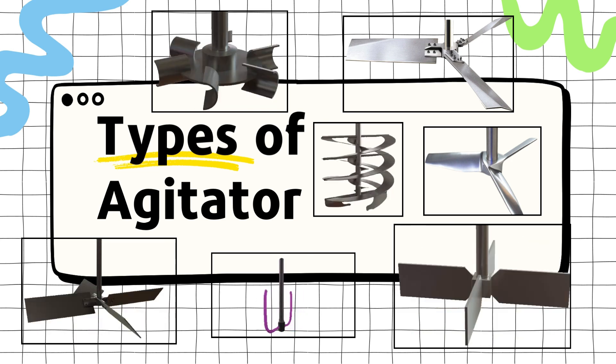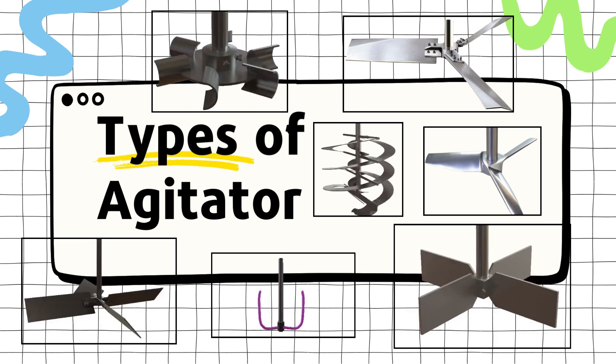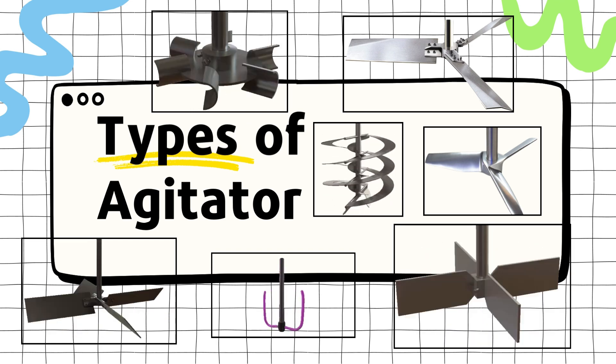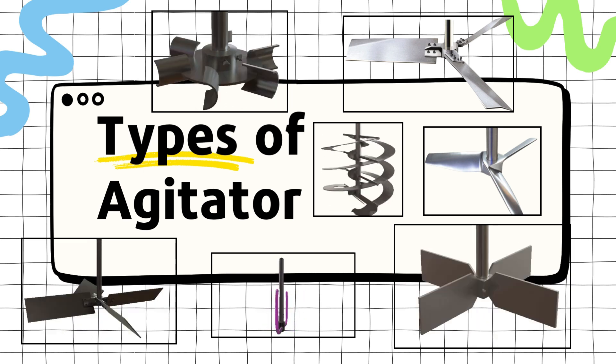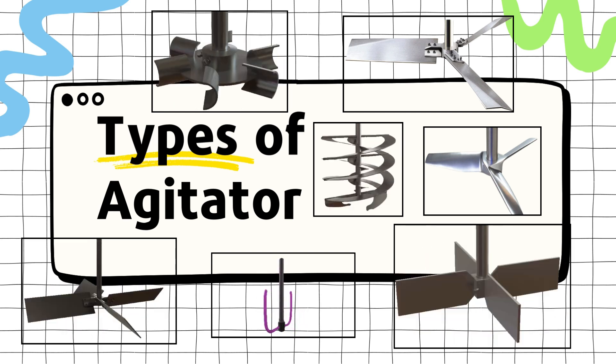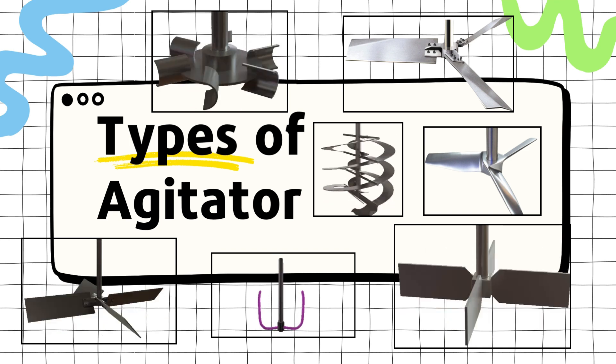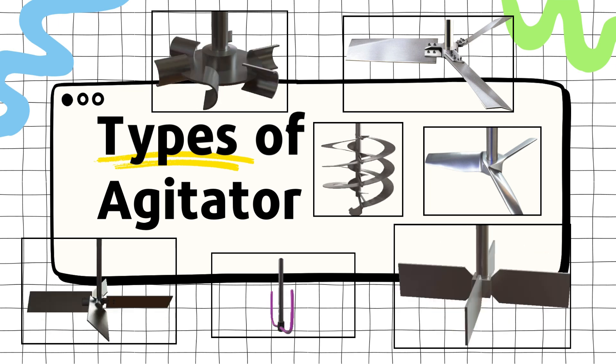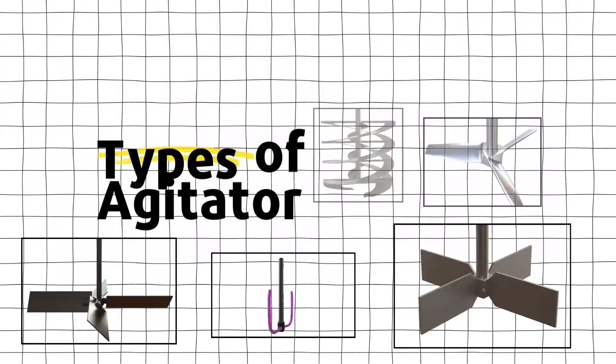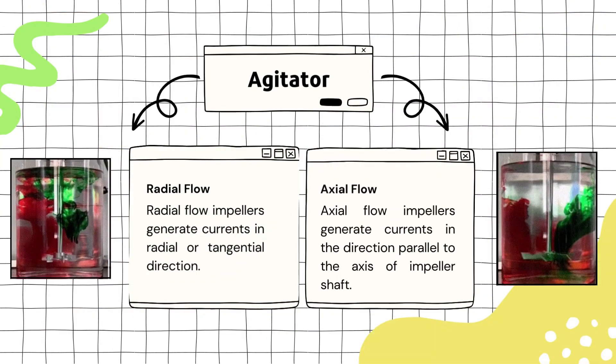Let's begin our discussion with what are the different types of agitators. Agitators are usually like mixers, and we sometimes call them impellers. They are like a beater in a mixer or a blender.